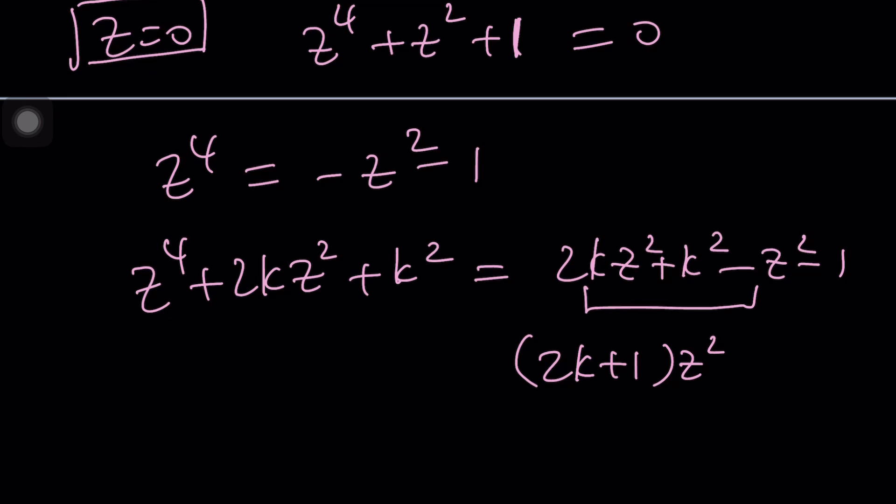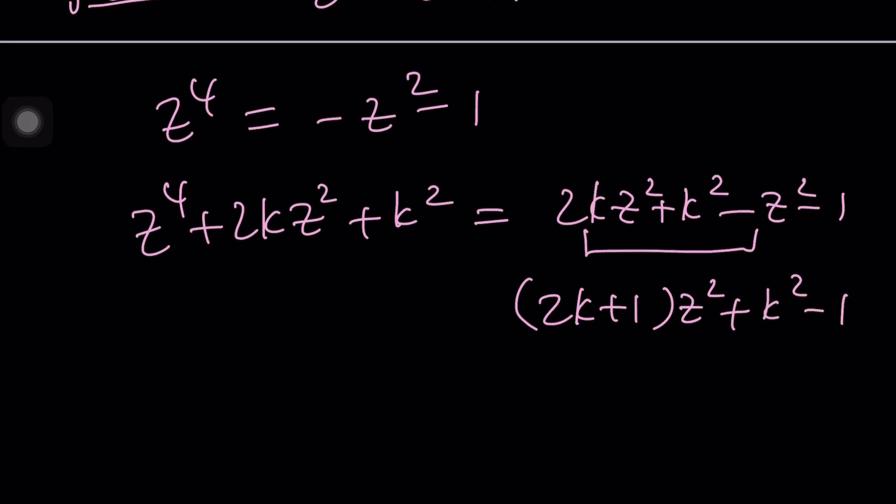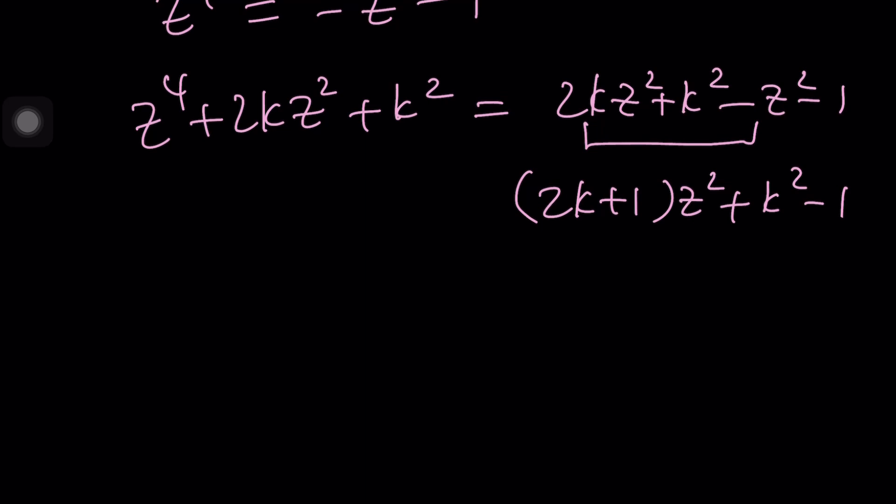So I think this is what should be happening. If you want this to be a perfect square, on the left hand side, we have Z squared plus K quantity squared. If the right hand side is a square too, then we kind of need to get rid of the constant term because that's going to prevent it from being a perfect square. Make sense? So in other words, K squared minus 1 should be 0, which means K is either 1 or negative 1.